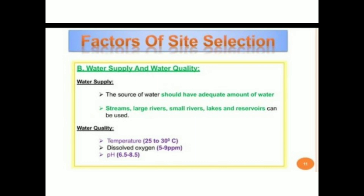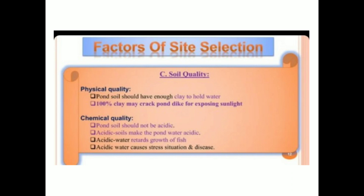The next factor is water supply and water quality. The source of water should have an adequate amount of water that can be supplied when required. Streams, large rivers, small rivers, lakes, and reservoirs can be used. For water quality: temperature should be 25 to 30 degrees Celsius for warm-water fish; cold-water fish like trout need below 15 to 18 degrees Celsius. Dissolved oxygen should be 5 to 9 parts per million and pH should be 6.5 to 8.5.